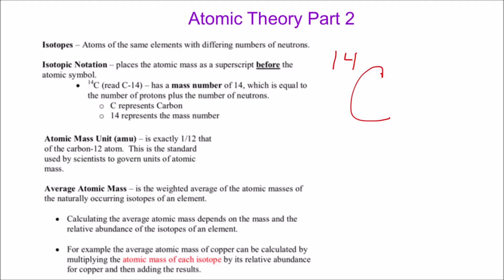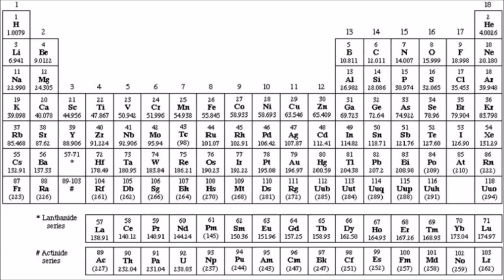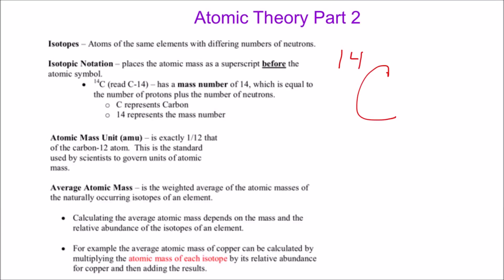Remember that the atomic mass represents the number of protons plus the number of neutrons for that element. Carbon has an atomic number of six, and the atomic number is equivalent to the number of protons. So if the atomic mass equals protons plus neutrons, and the atomic number equals only the number of protons, we can figure out how many neutrons an isotope has.